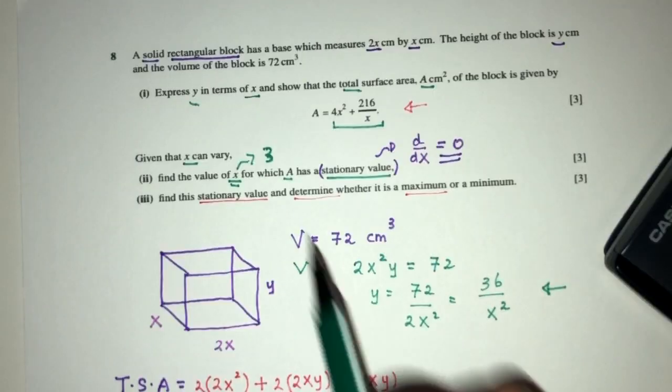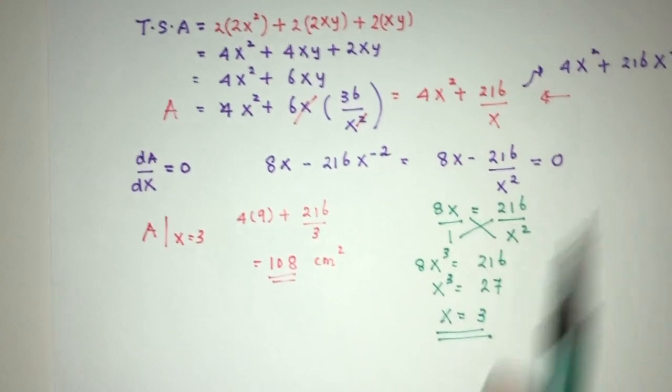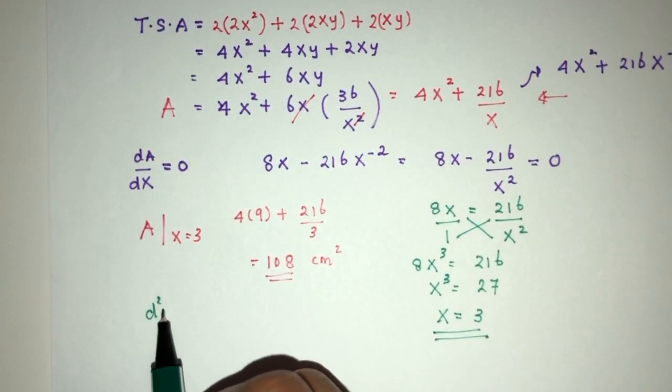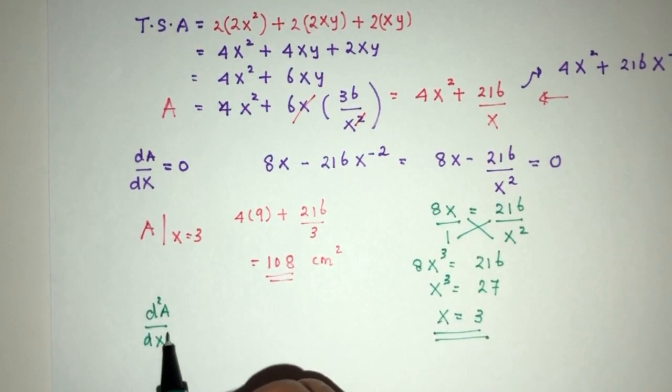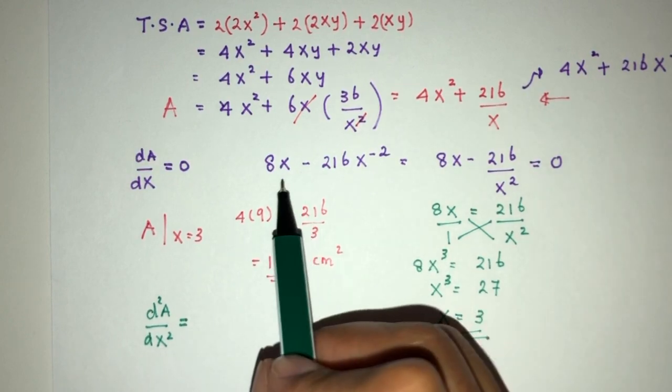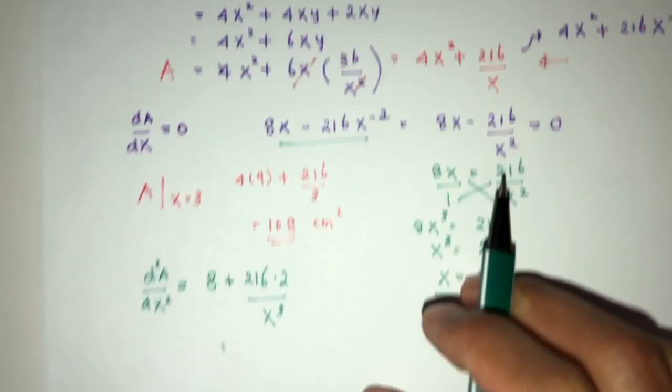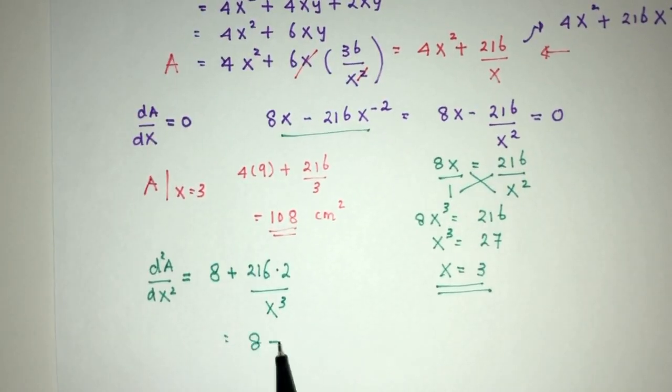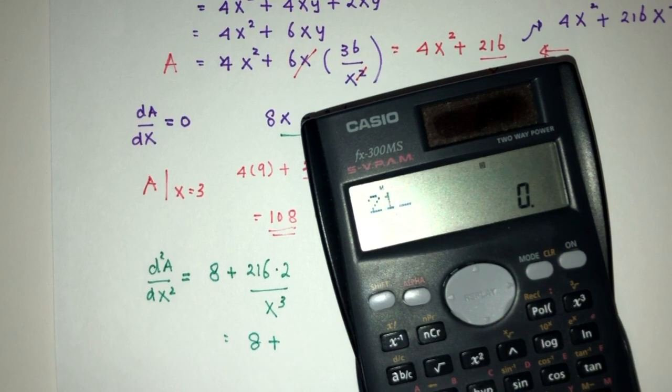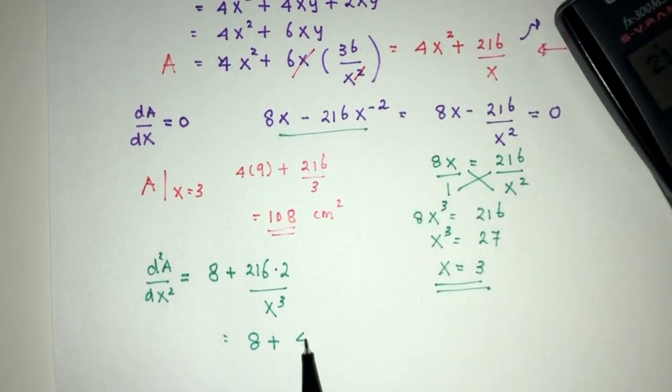Now again, we want to find the nature of this value, so we have to find d²A by dx². So we have to use this one, right? You will have 8 here, plus 216. So we have times 2, and that will be x power 3. That will be what? So 8 plus 216 times 2, that will be 432 over x power 3.